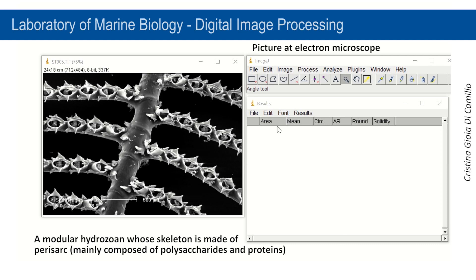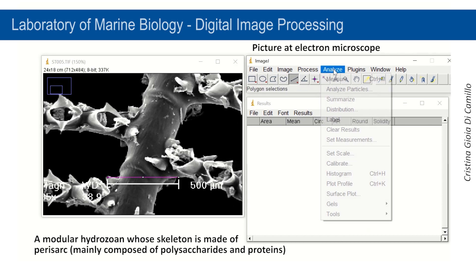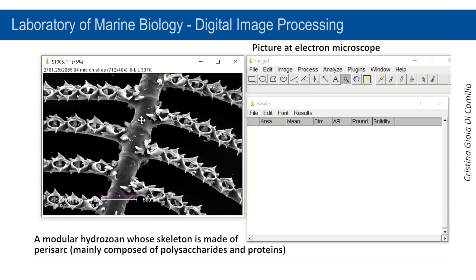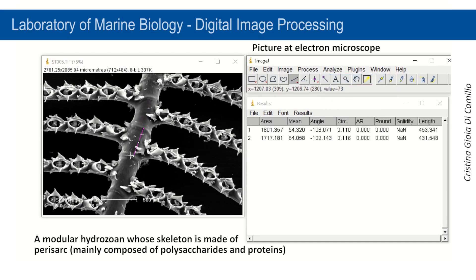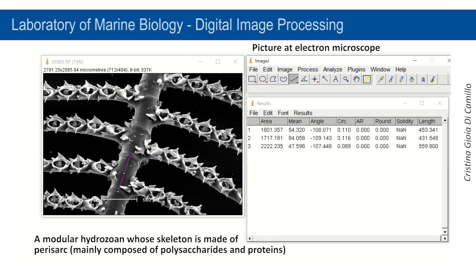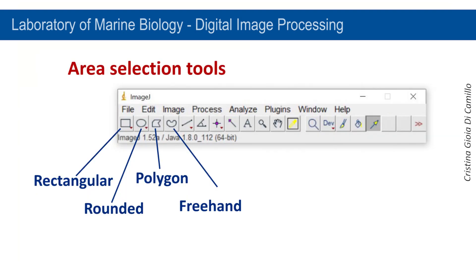ImageJ can be used to measure objects photographed by electron microscopy. Here you can see a picture of a colonial hydrozoan. Measurements are indispensable to assess intraspecific trait variation in plastic organisms. ImageJ allows collecting several typologies of measurements. Now we will see how to determine a surface using the Area Selection tool.